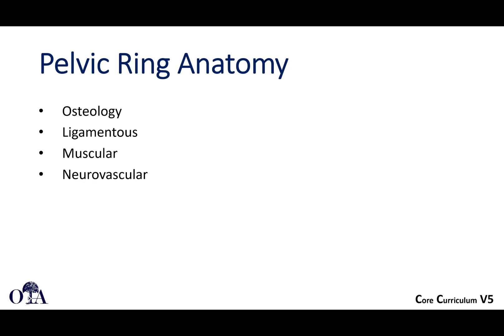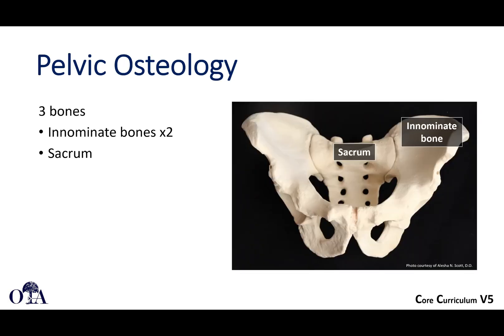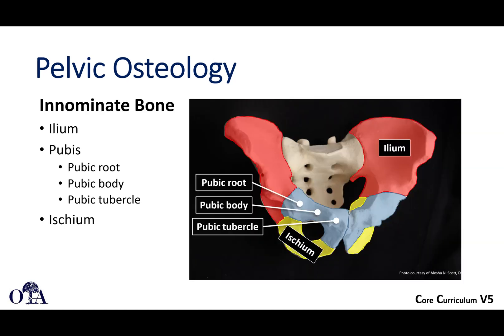Let's first start with pelvic ring anatomy. It's really helpful to get yourself a bone model for this — if you're seriously interested in understanding it, that's really essential. There are three bones: the innominate bones on the left and on the right, and then the sacrum, which essentially makes up your pelvis.